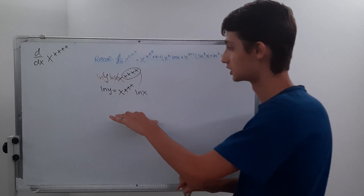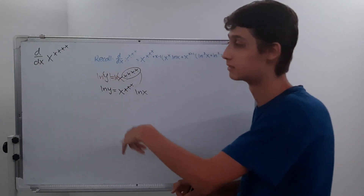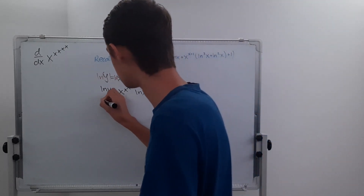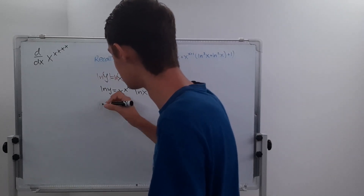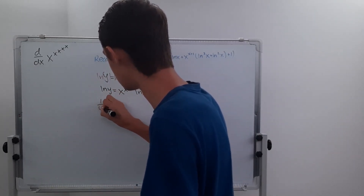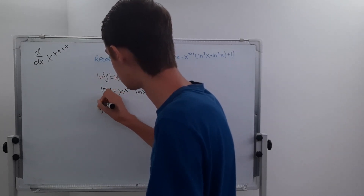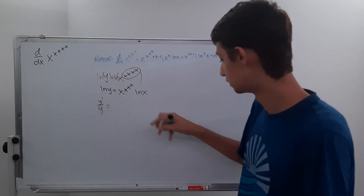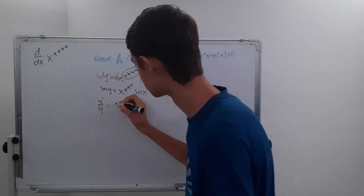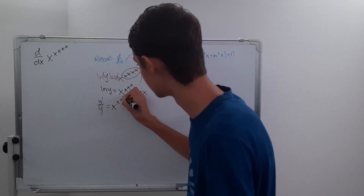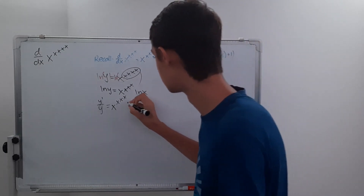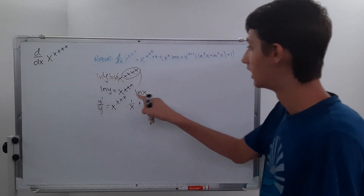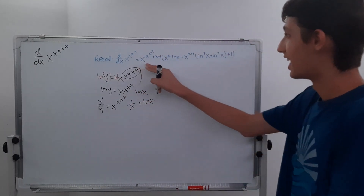So we have this expression, and if we take the derivative of both sides, we really have everything we need. The left side gives us 1 over y, and we put y prime on top: y prime over y. That's our derivative there. That's going to equal x to the x to the x to the x times 1 over x, plus ln x times the derivative of x to the x to the x to the x, which is what we found previously.